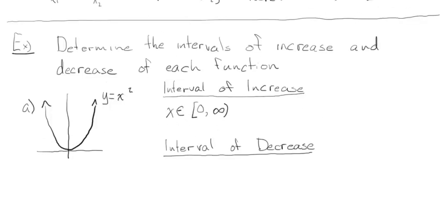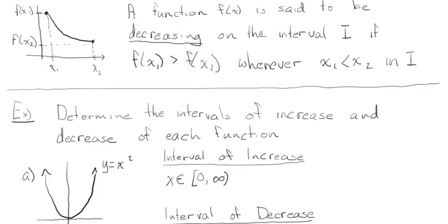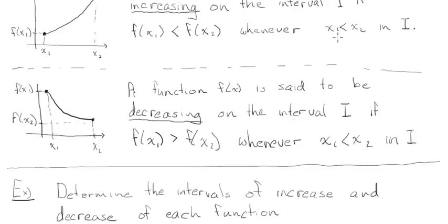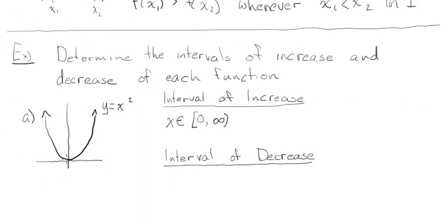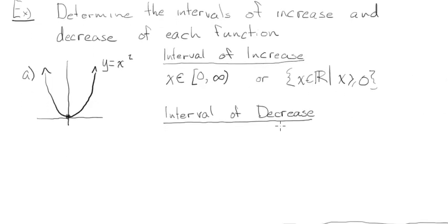We include zero in the interval of increase because, going back to the definition, for the point (0, 0), all points to the right have larger y-values, so zero satisfies the condition. You could also write it in set notation as all x such that x ≥ 0. The interval of decrease is where y-values are going down — on the other side — so that's (-∞, 0].